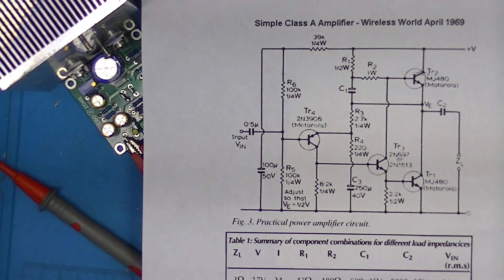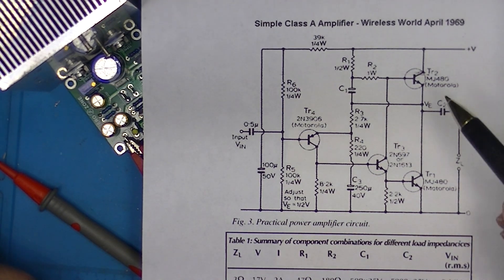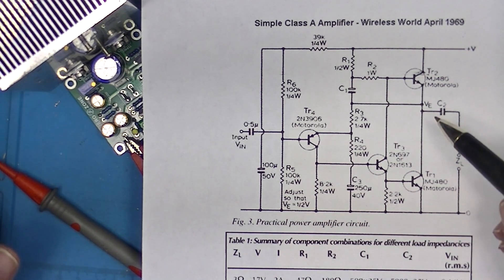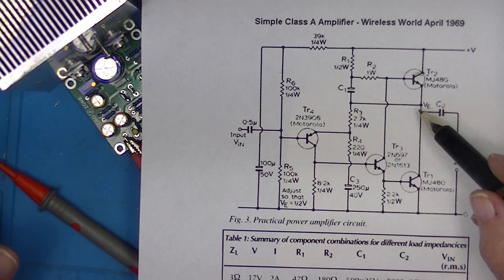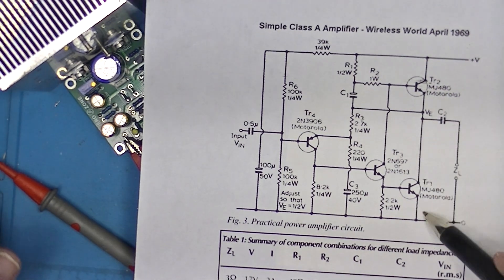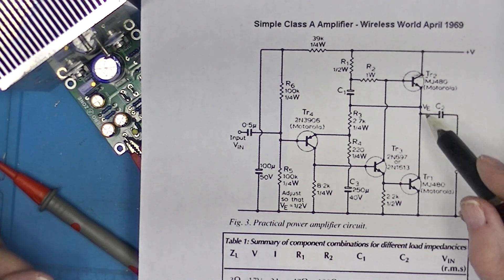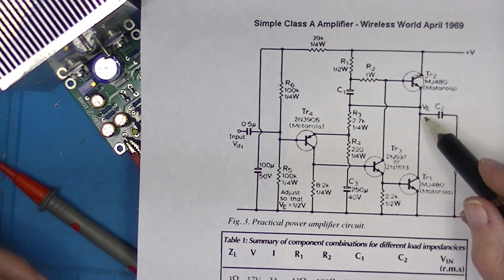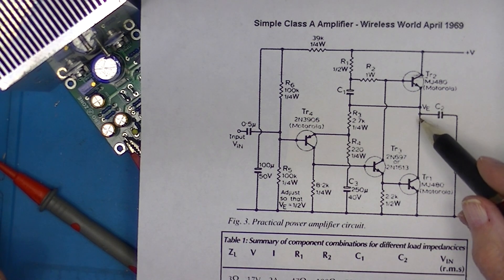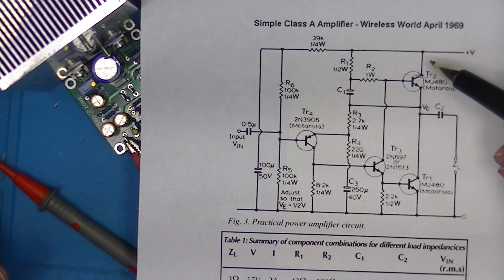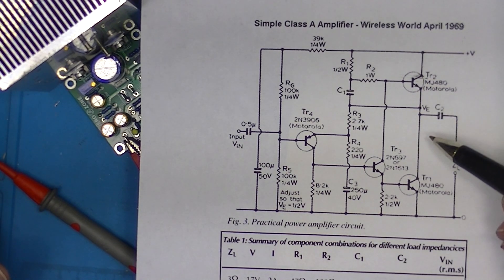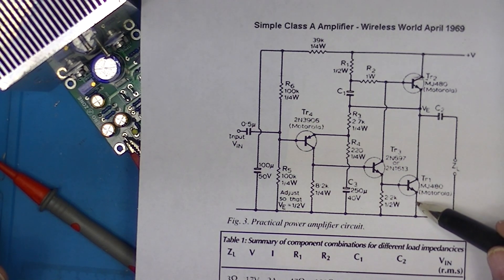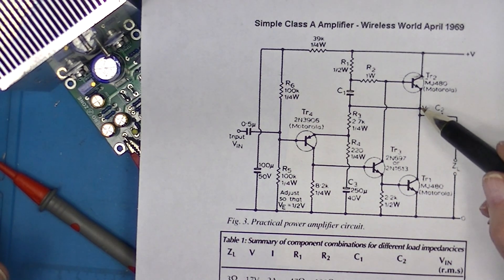I recently did a series on the 1969 Hood Class A amplifier and I emphasized that the voltage at this point should be one half of this total voltage. Now the voltage at this point is a result of a voltage divider. The upper resistance in the voltage divider is this transistor and the lower resistance is this transistor.